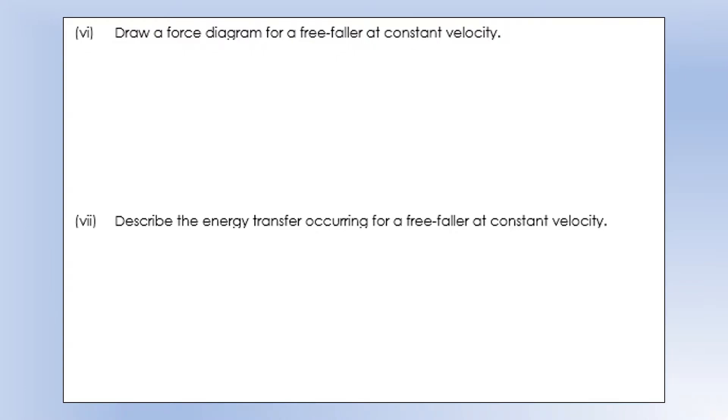Okay, so let's have a look at a completely different example that gets at the same idea. First of all, we're going to draw a force diagram for a free-faller at constant or terminal velocity. The weight force downwards is going to be equal to the force of air resistance upwards at constant velocity.